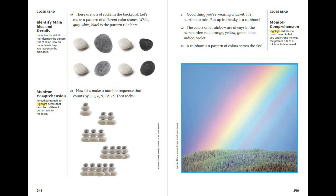Good thing you're wearing a jacket — it's starting to rain. But up in the sky is a rainbow! The colors on a rainbow are always in the same order: red, orange, yellow, green, blue, indigo, violet. A rainbow is a pattern of colors across the sky.